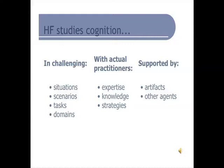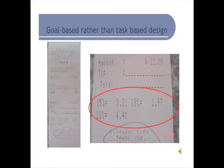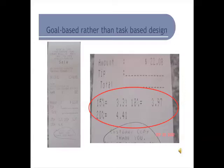We also know that practitioners are supported by artifacts and other agents in the field. A simple example of a design technique is goal-based rather than task-based design. On an everyday item such as a restaurant receipt, if the restaurant would like to induce a bias consistent with their goal, instead of allowing you to select your own tip amount, they can guide you with suggested tip amounts — being proactive and leading you on that path rather than just showing a traditional 10% or 15%.